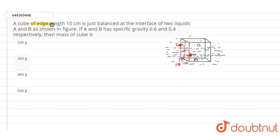In this question, it is given that a cube of edge length 10 centimeters is just balanced at the interface of two liquids A and B, as shown in this figure. The downward is A liquid and the upper one is B liquid.